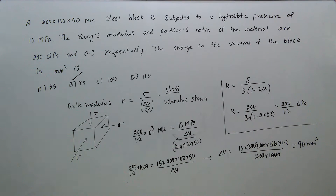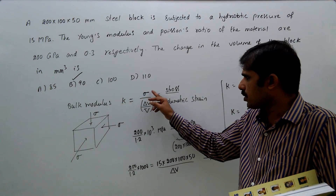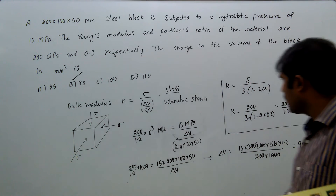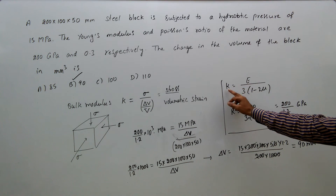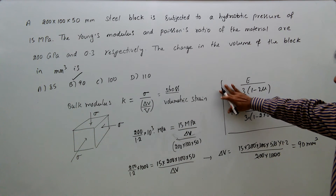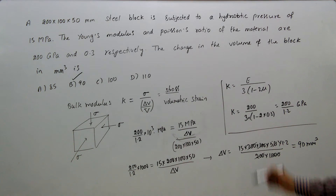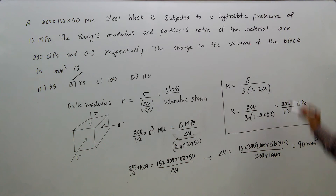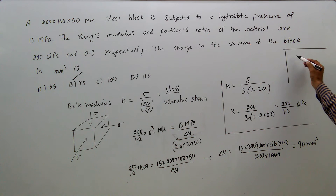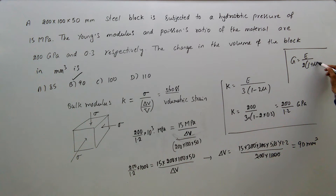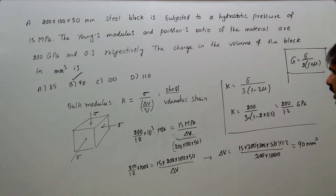Remember these two formulas: K equals sigma divided by (ΔV/V), and the bulk modulus to elastic modulus relation K equals E divided by 3(1 minus 2μ). One more relation to remember for other problems is G equals E divided by 2(1 plus μ). Sometimes the relationship between E, K, and G is also needed.